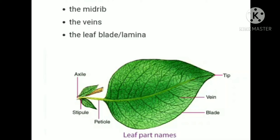The broad green part of the leaf is called the lamina. The small lines are called veins. In the center there is one long continuous vein going from the stem to the tip of the leaf — this is called the midrib. The design made by veins in a leaf is called leaf venation. There are different types of leaf designs depending on veins.